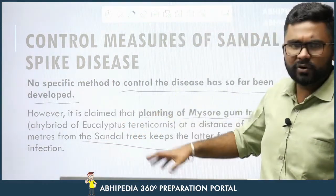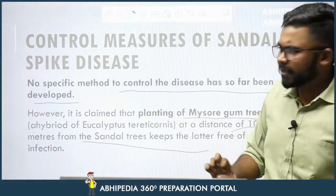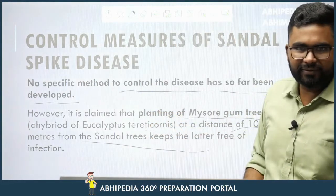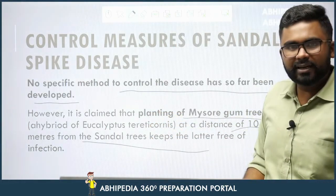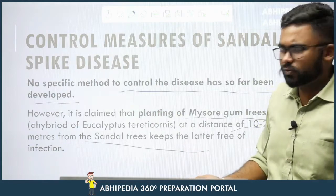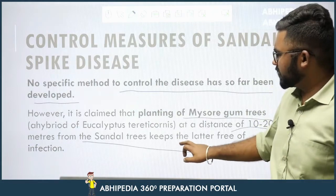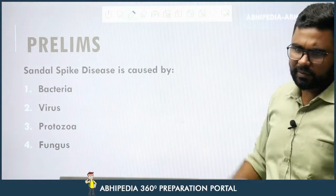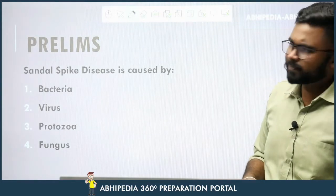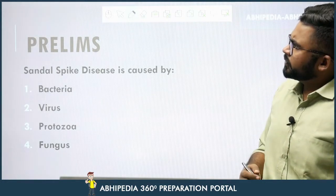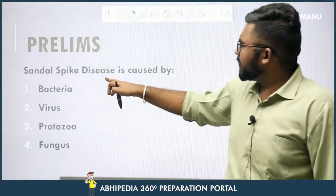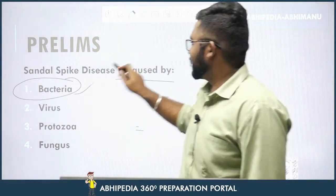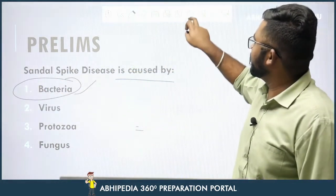This may not be asked in Prelims because it is not well established, but it is good knowledge for Mains if it comes up as a reference. For the practice question — pause the video and attempt it. Sandal Spike Disease is caused by — the answer is bacteria. Simple enough.